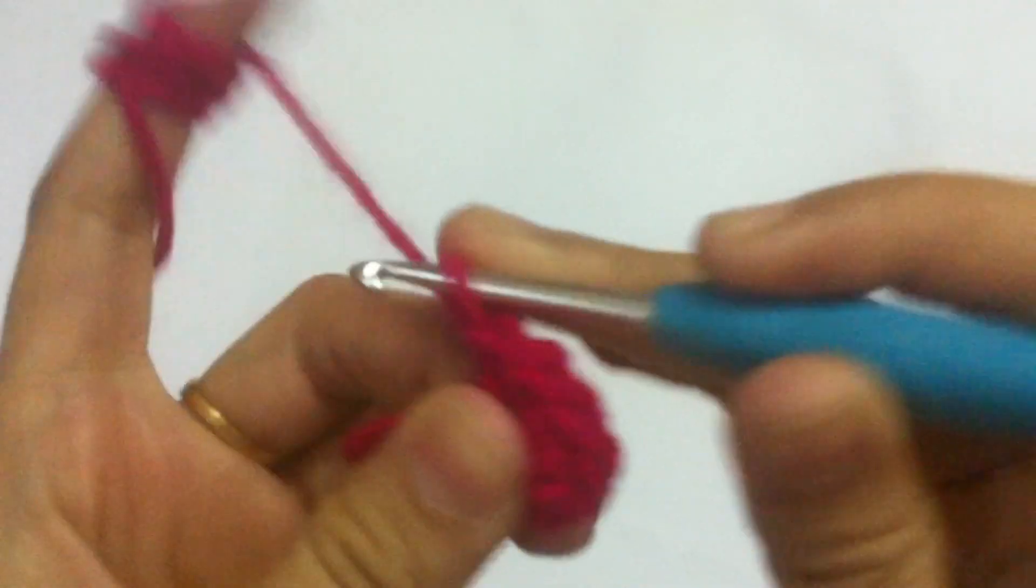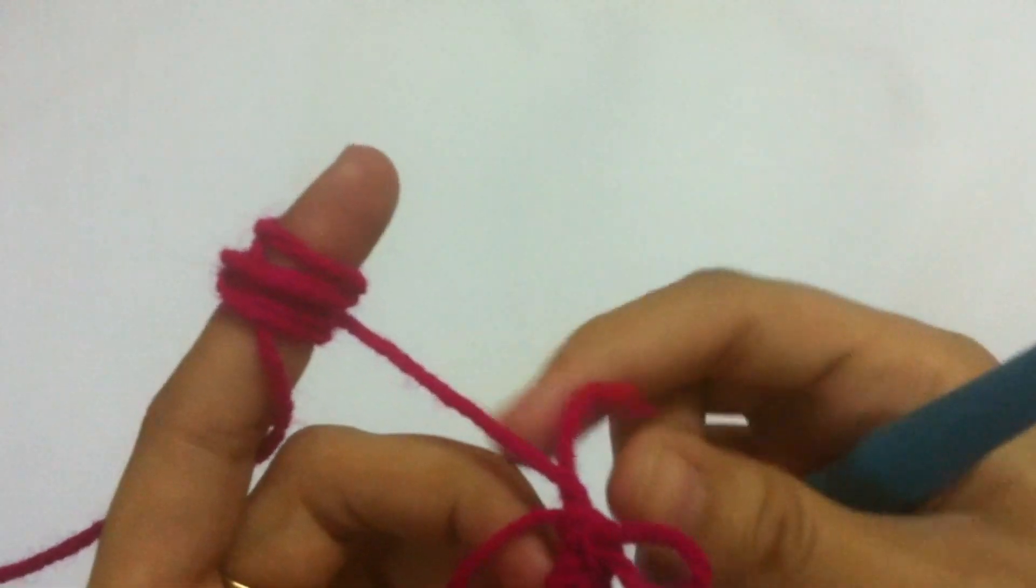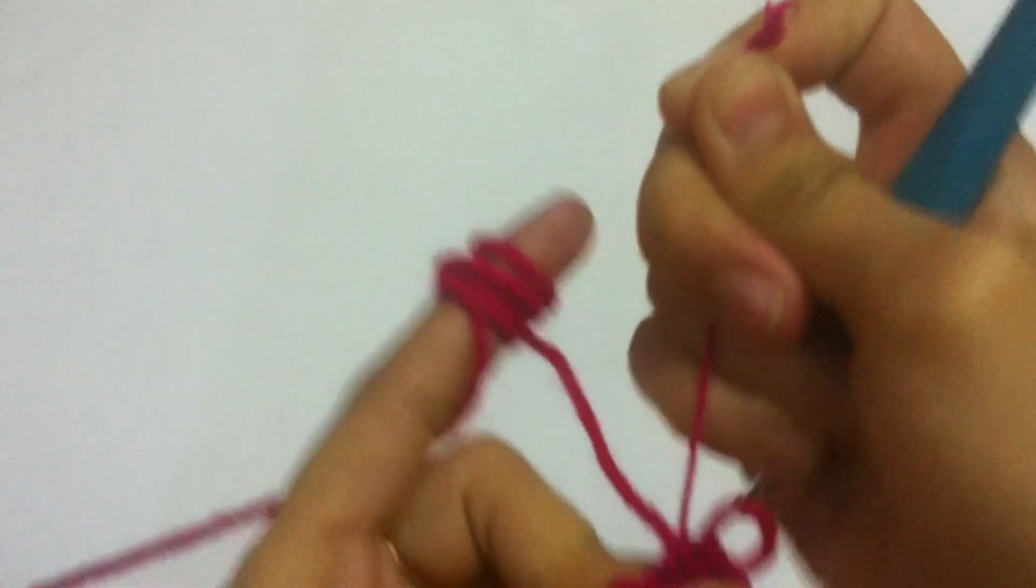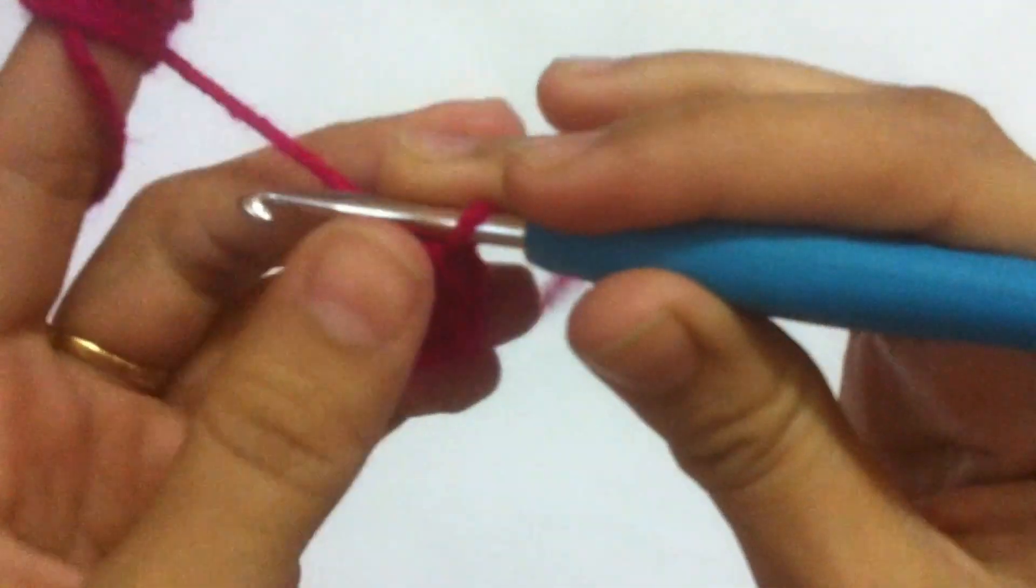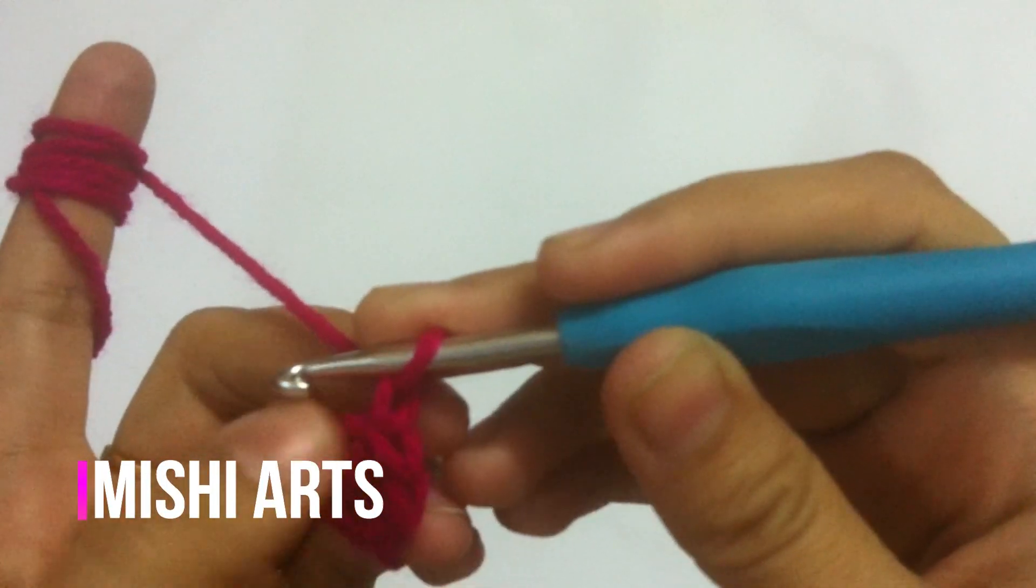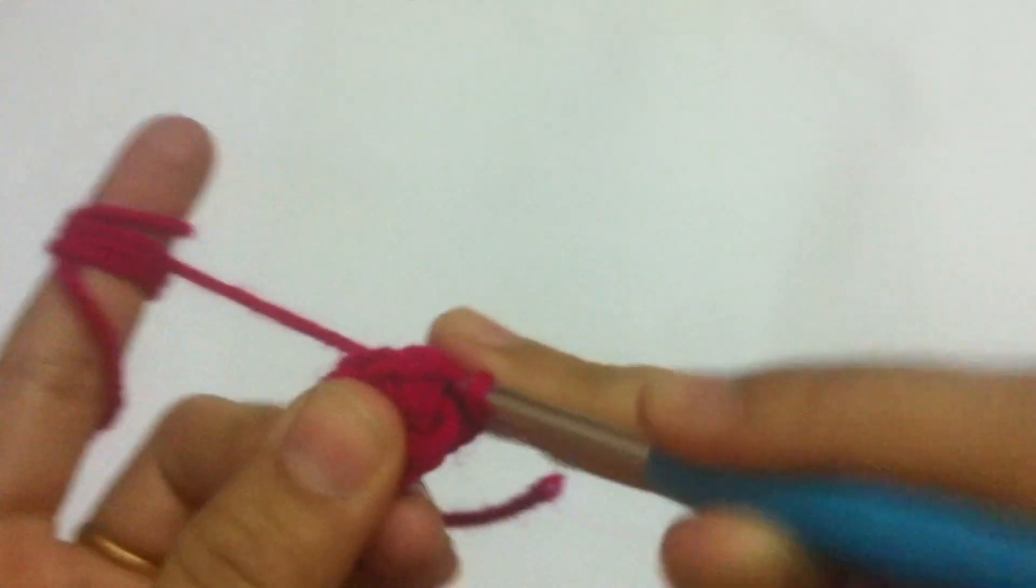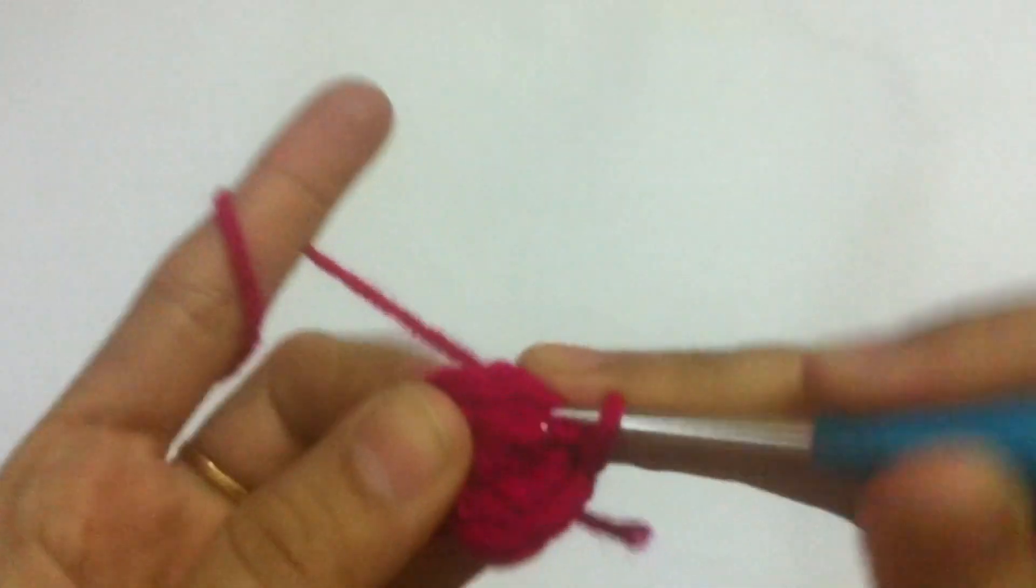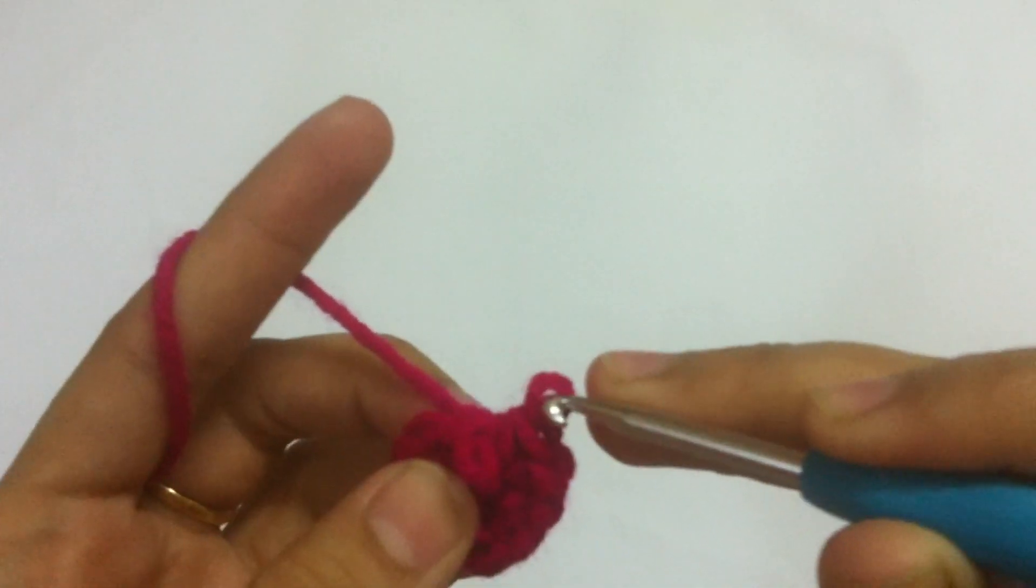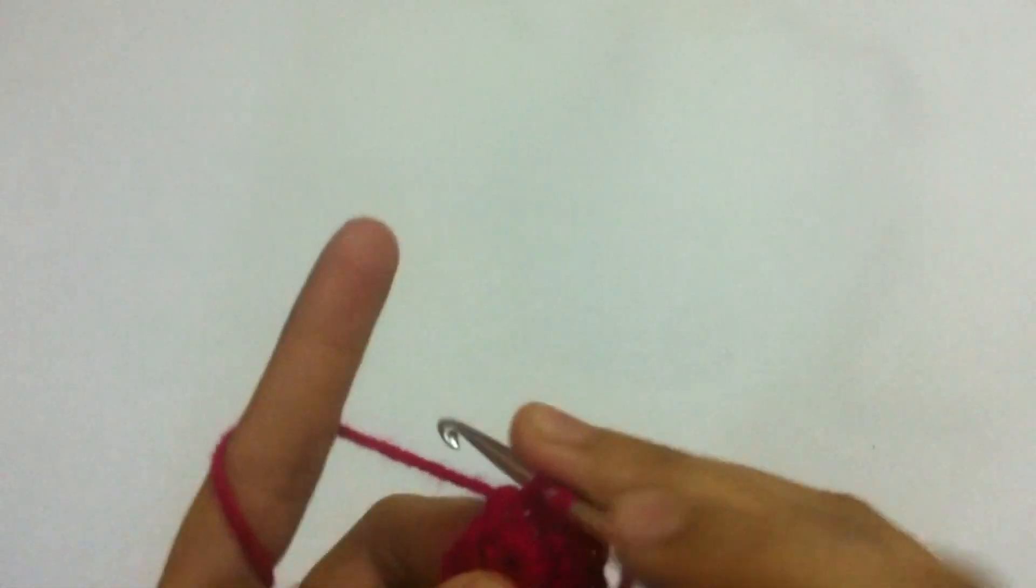After making six single crochets, we are going to pull this tail so that our magic circle is tight. Slip stitch into our very first stitch like this. Moving on, chain one. Now we are going to make two single crochets in every stitch, so there will be a total of 12 single crochets.